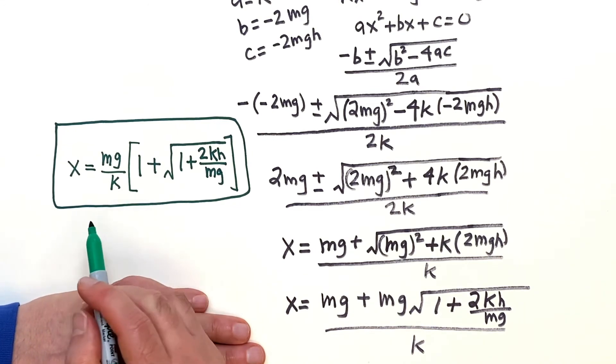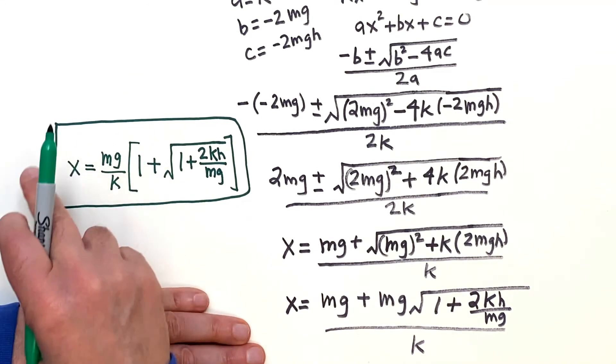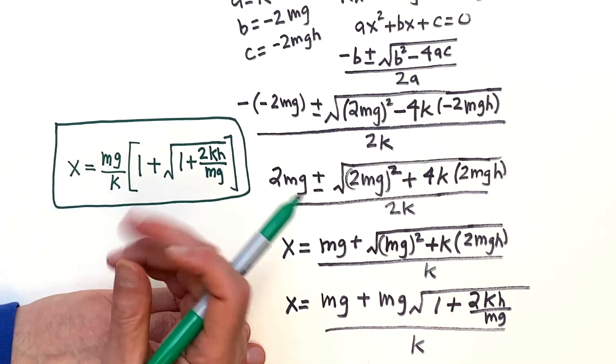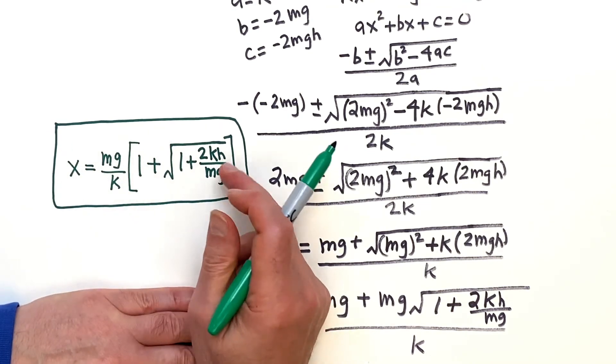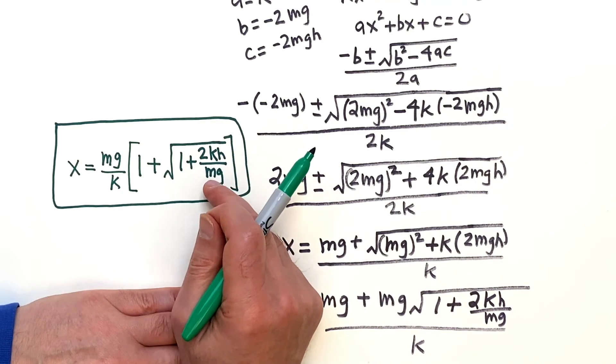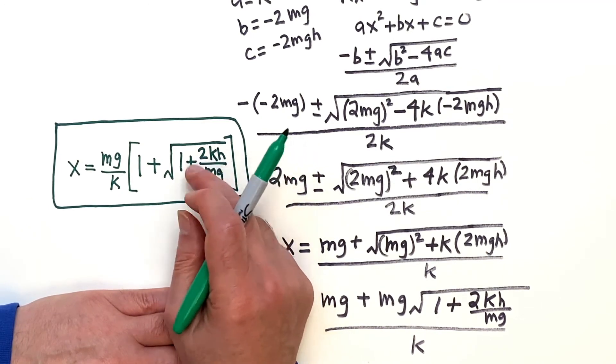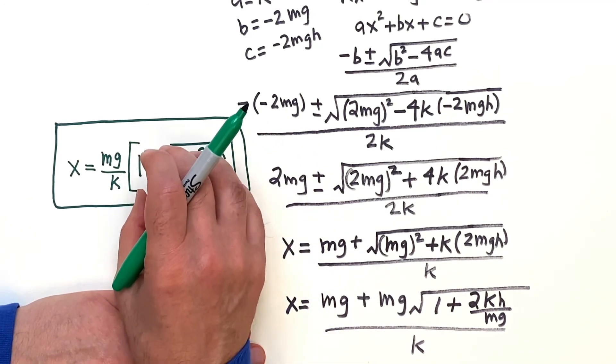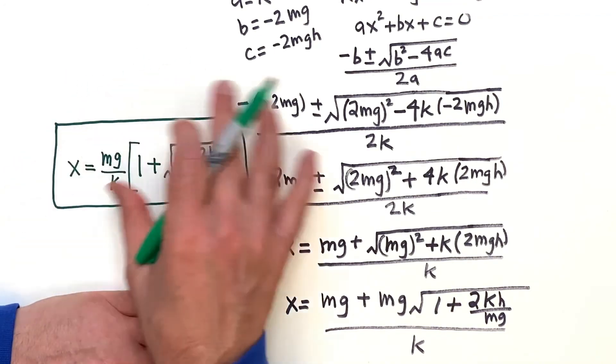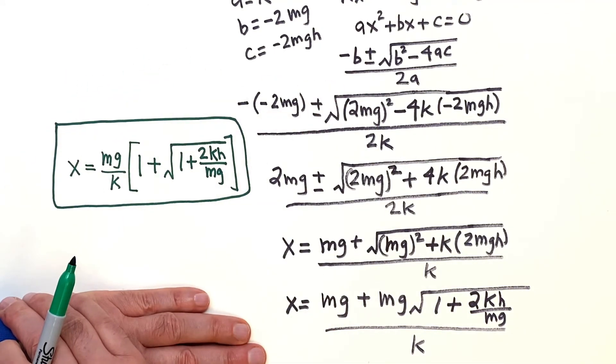Did the units check out? Well, kx is a force, so if you bring the k over here, you got a force, and mg is a force, so that looks good. And then kh is a force over mg, so there's no units there, no units in here. And then when you have the k over there and mg units, you're good. You're very good.